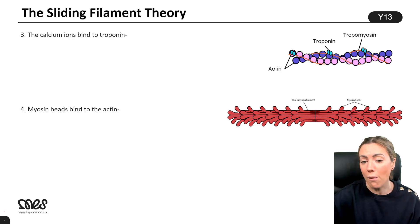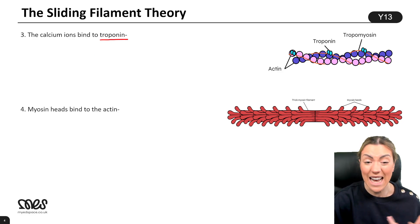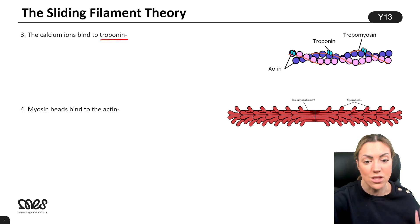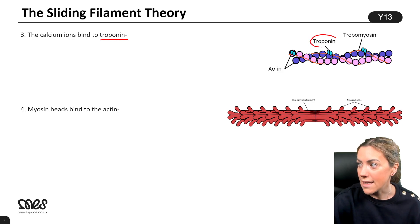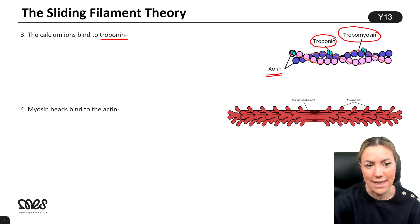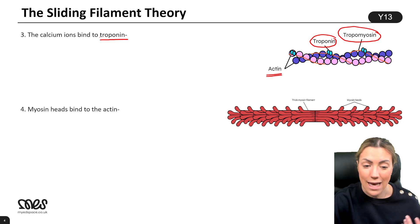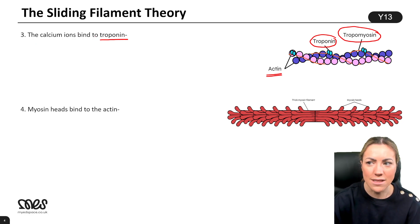The calcium ions bind to troponin. Troponin is a protein — you don't need to know the name for AQA, but it makes the story make sense. Troponin is a globular protein attached to a fibrous protein called tropomyosin, which is wrapped around the actin filament. So you've got three proteins: the actin filaments, tropomyosin wrapped around them, and globular troponin attached to the tropomyosin. The calcium ions bind to troponin and cause it to change shape.